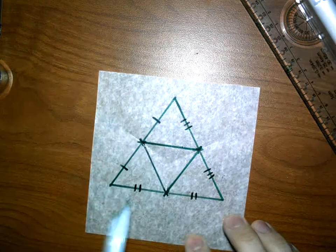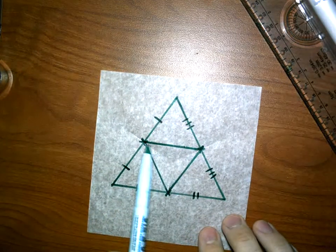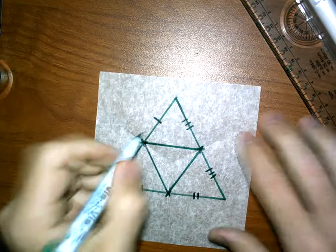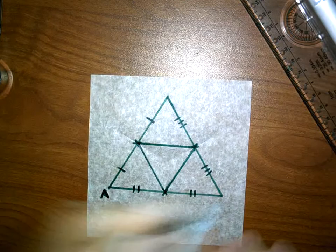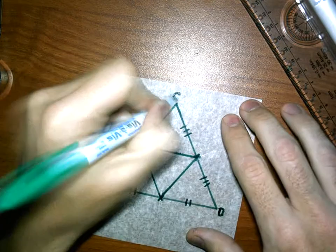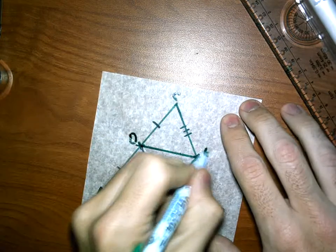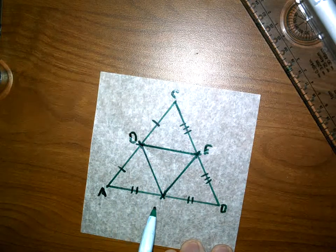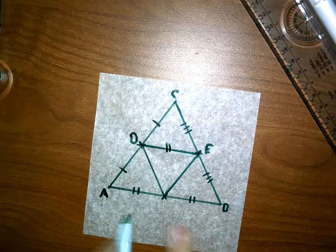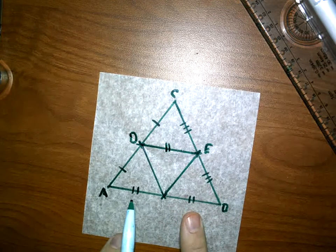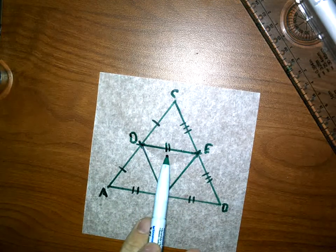Now, by the mid-segment theorem, we know that the mid-segment, maybe this side, we'll label it here. We have A, B, C, and this will be D, E. Mid-segment DE is parallel to AD, but it's also half the length. So if I'm saying that this is two double-marked segments, this one would be one.